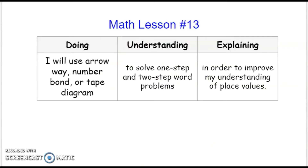Let's go ahead and jump straight into our objectives. Remember, our objective is always broken up into three separate parts so we know exactly how we're going to do something, what it is that we need to understand about it, and why we're doing it or why it's important. I will use arrow way, number bonds, or tape diagram to solve one-step and two-step word problems in order to improve my understanding of place values. We will gain a deeper and better understanding of place values as we use arrows, arrow way, number bonds, and tape diagrams to count up and down in our word problems. Let's jump straight into the teacher model.